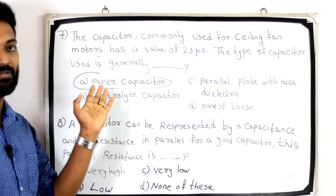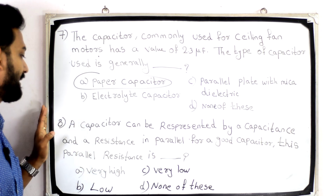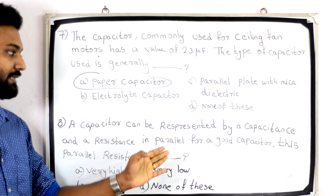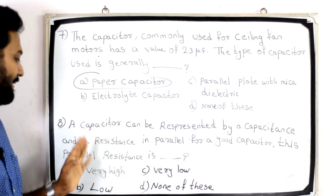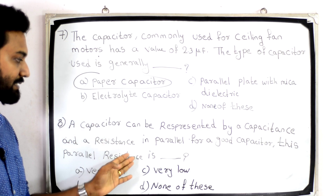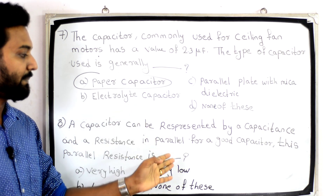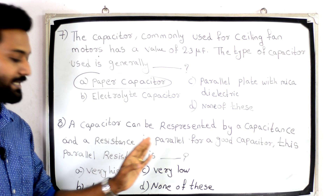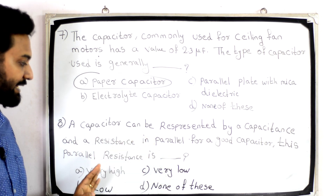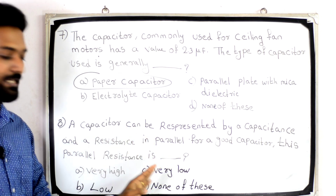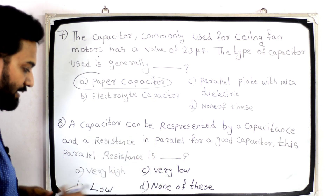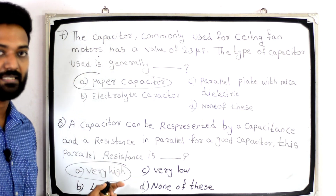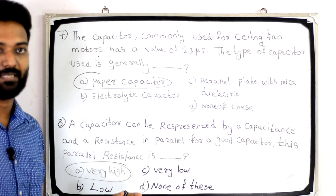Capacitors commonly used for ceiling fan motors have a value of 2.3 microfarad; the type of capacitor used is generally paper capacitors. Next question: A capacitor can be represented by a capacitance and a resistance in parallel. For a good capacitor, this parallel resistance is — option: very high, very low, low, or none of these. The answer is very high.